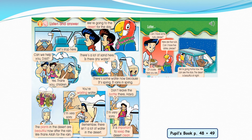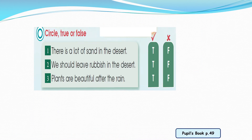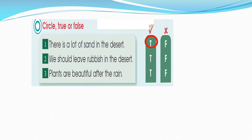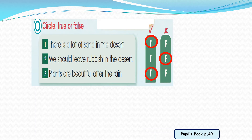Now let's answer the questions. Circle true or false. Number one: There is a lot of sand in the desert — that's true. Number two: We should leave rubbish in the desert — of course it's false. Number three: Plants are beautiful after the rain — that's true.